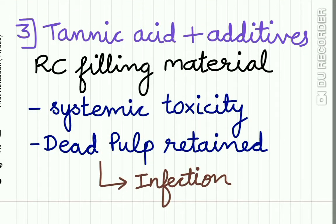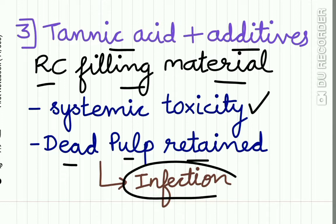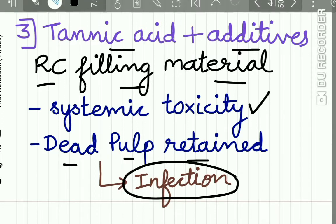The third mummifying agent is a combination of tannic acid with certain additives, used as a root canal filling material. The disadvantages of this agent are systemic toxicity, and in some cases the dead pulp was retained, which was prone to infection.